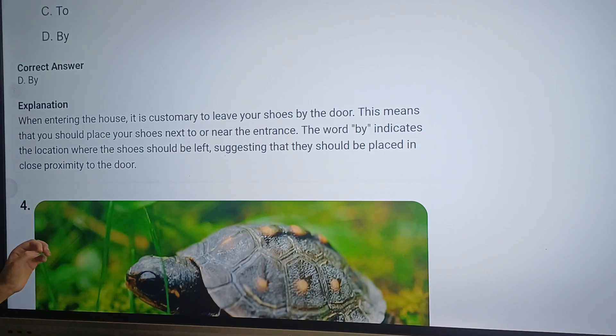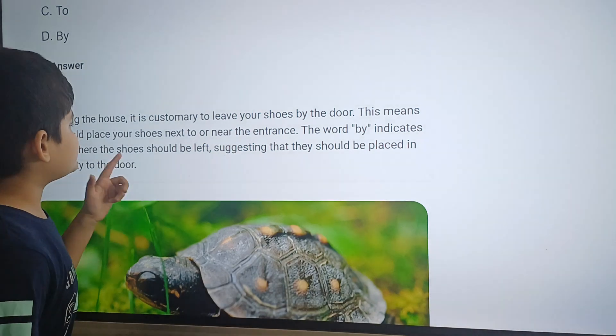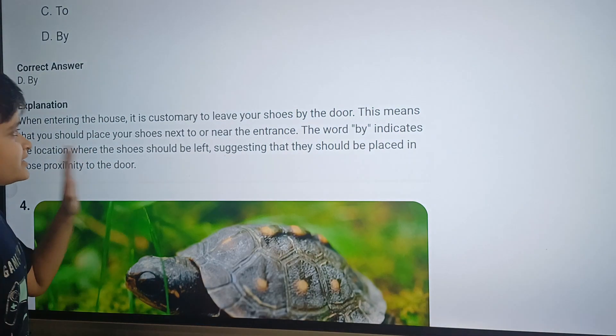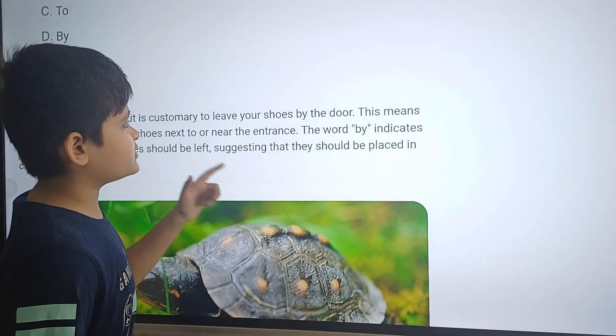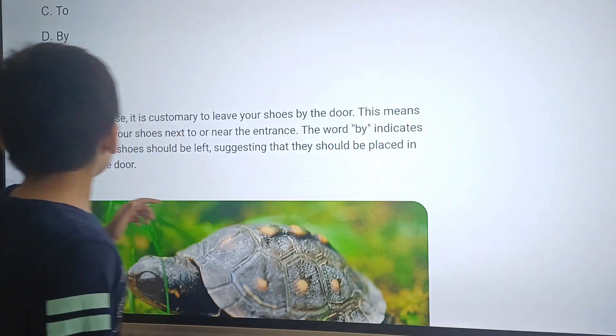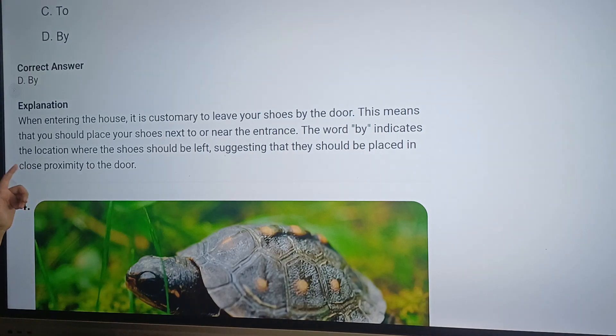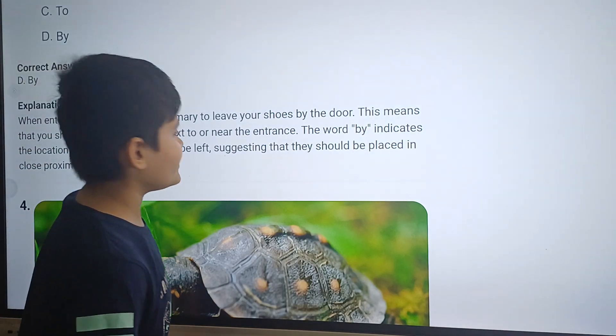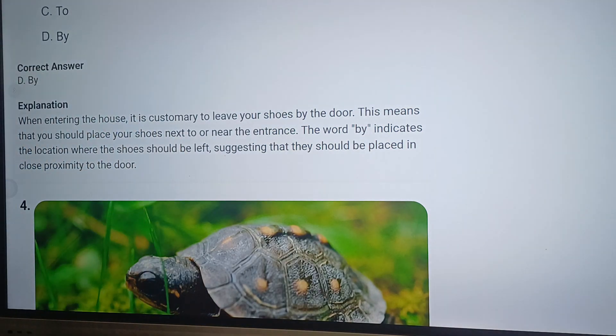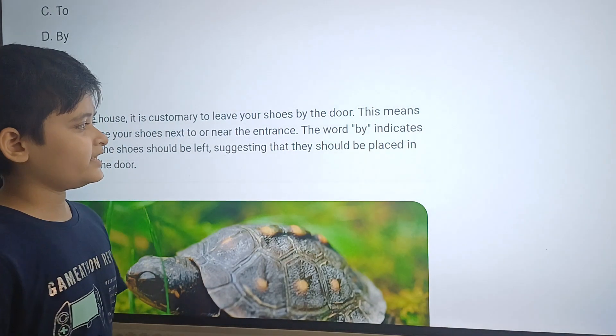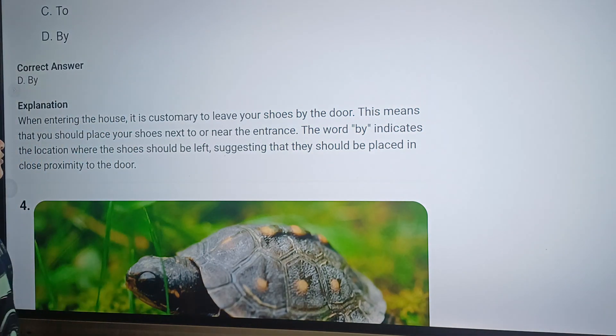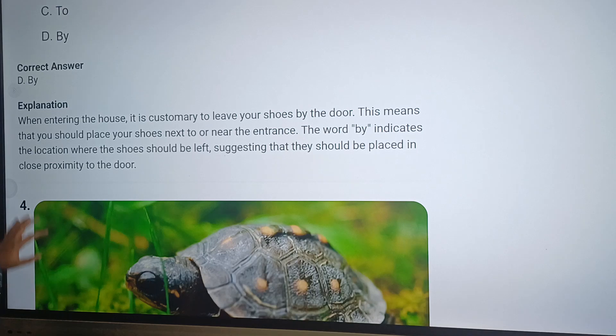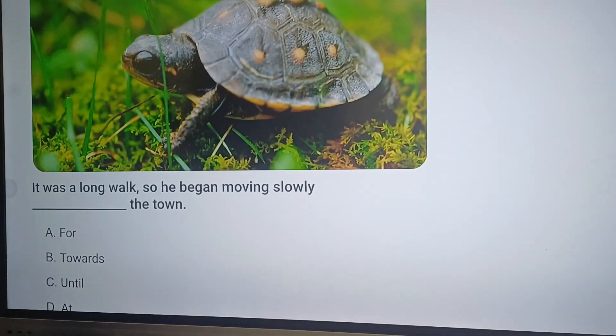The explanation for this answer is this: When entering the house, it is customary to leave our shoes by the door. This means that we should place our shoes next to or near the entrance. The word by indicates the location where the shoes should be left, suggesting that they should be placed in close proximity to the door. Understand students? Now let's go and move on to the fourth question.